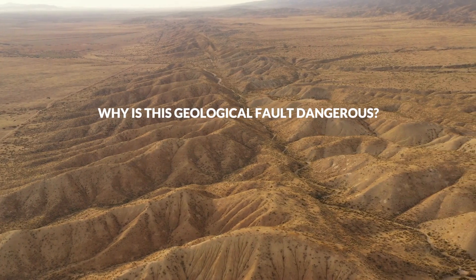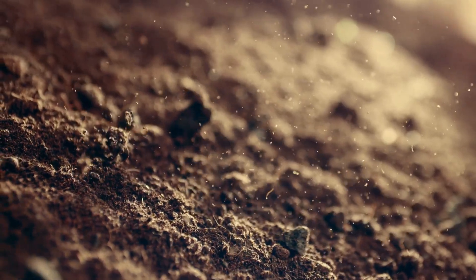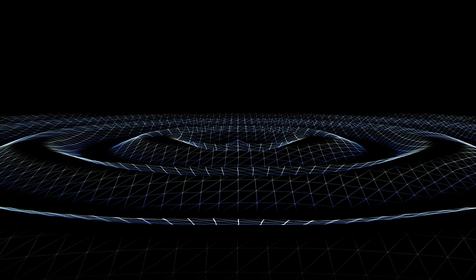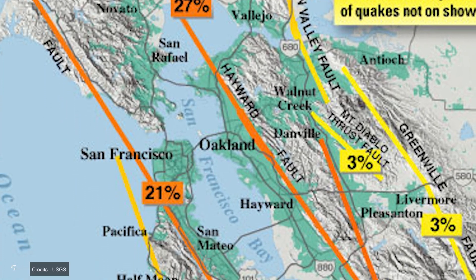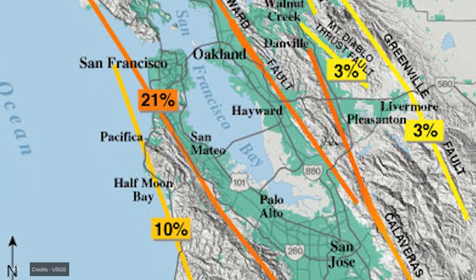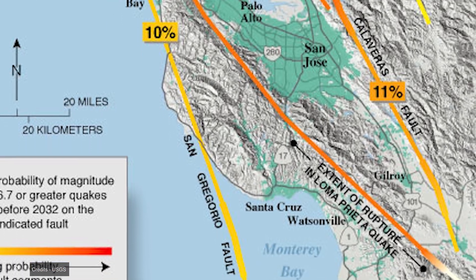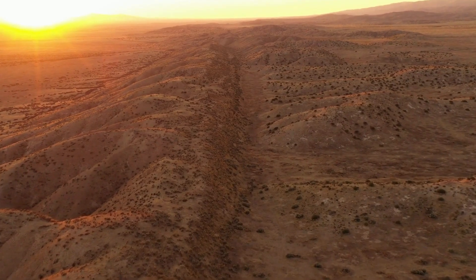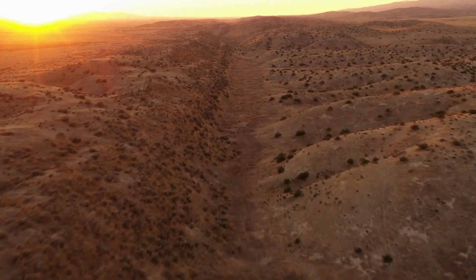Why is this geological fault dangerous? The San Andreas Fault's influence on California's seismic activity is not limited to the region directly adjacent to it. It is also part of a more extensive, complex system of geological faults running through California. The energy released by tectonic movements can trigger a cascade of effects on other nearby faults, such as the Hayward Fault, the Calaveras Fault, or the San Jacinto Fault. This phenomenon of interaction between faults is known as stress transfer and is a crucial factor in assessing seismic risk in the region.